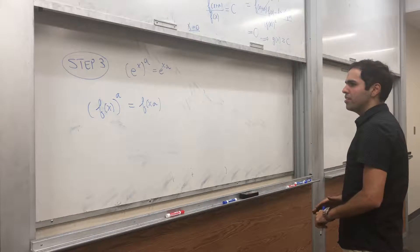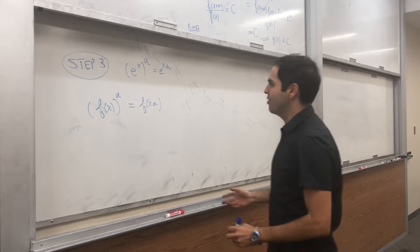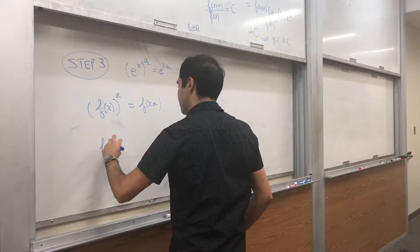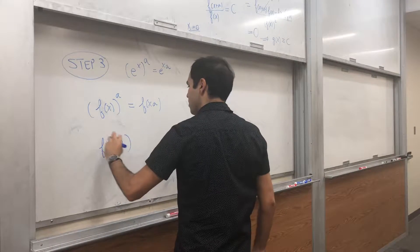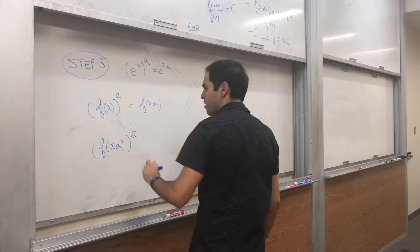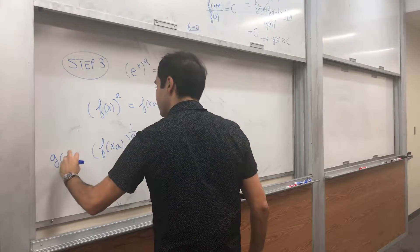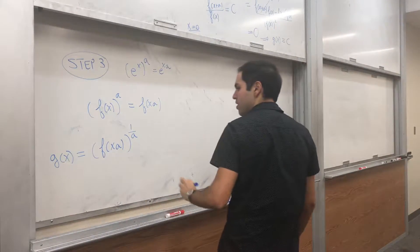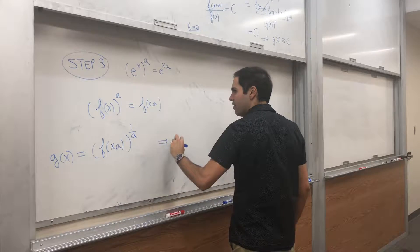And for this, let's just calculate f of x a to the one over ath power. So, let g of x be this. And let's calculate g prime of x.